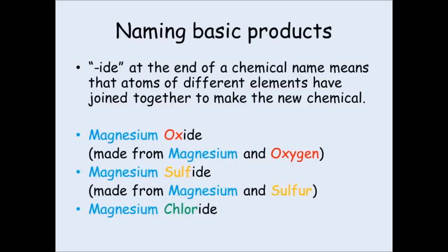So what do you think magnesium chloride is made out of? Well, hopefully some of you will have guessed that magnesium chloride is made out of magnesium and chlorine. So magnesium chloride contains magnesium and chlorine. The -ide means an atom of magnesium is joined to an atom of chlorine.